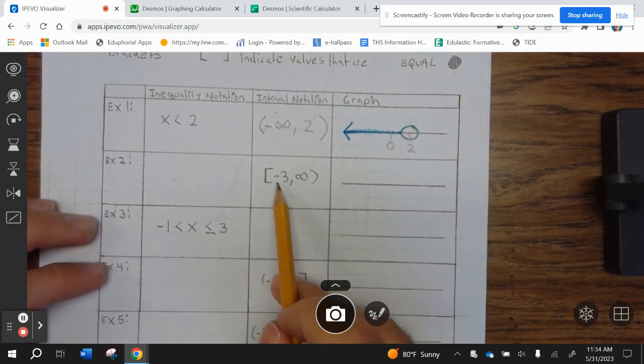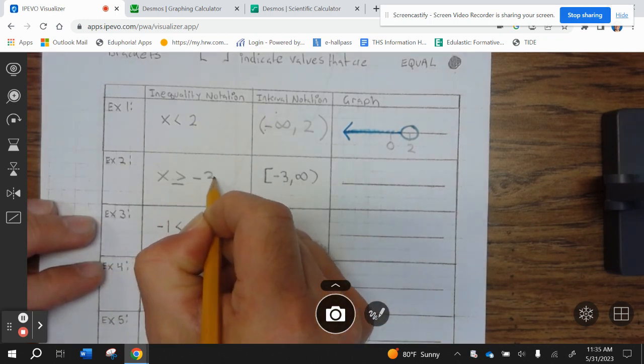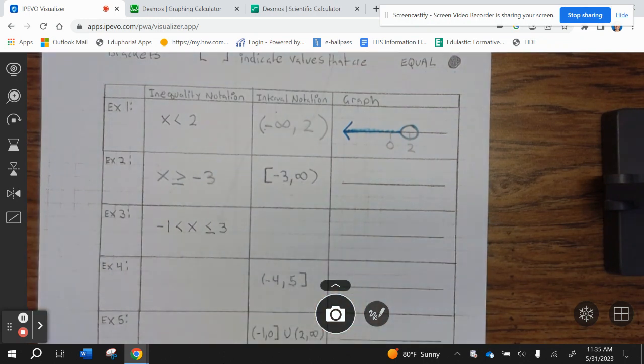All right. Now, example 2. We have bracket negative 3 to infinity. That means X is greater than or equal to negative 3 in inequality notation.